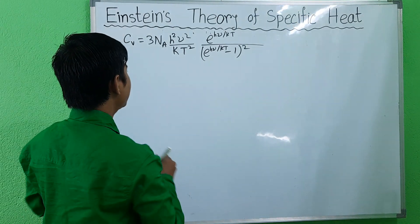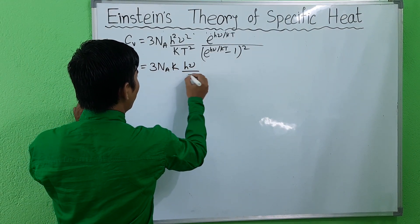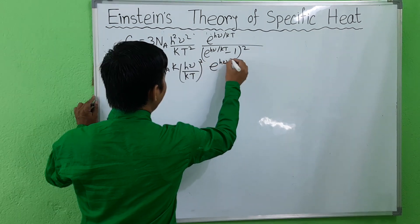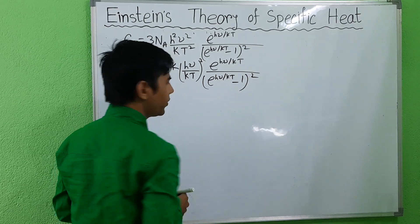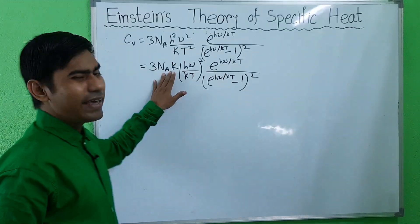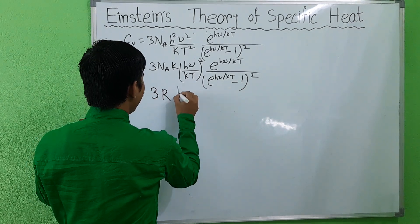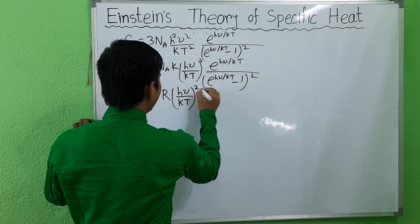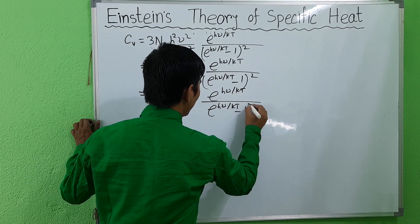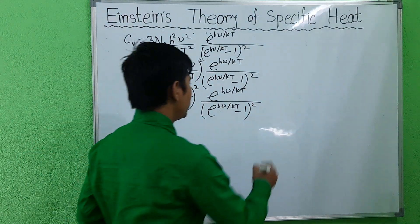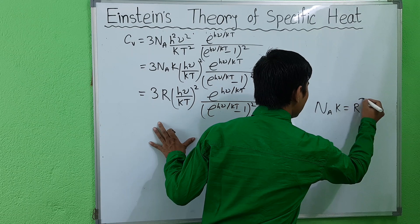This can be written as C_V = 3N_A k × (hν/kT)² × e^(hν/kT) / (e^(hν/kT) − 1)². Since N_A × k = R (the gas constant), this becomes C_V = 3R × (hν/kT)² × e^(hν/kT) / (e^(hν/kT) − 1)². Suppose this is equation 1.